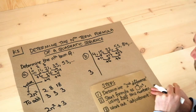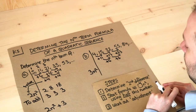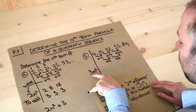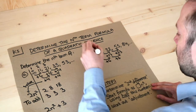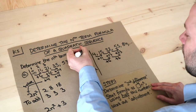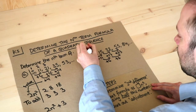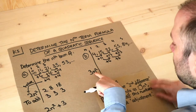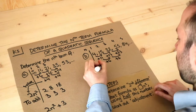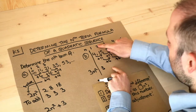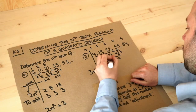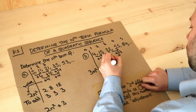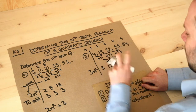We halve 6 to get 3, so our formula starts with 3n². Computing the sequence: 3×1² = 3, 3×2² = 12, 3×3² = 27. Three terms will be enough to work with.